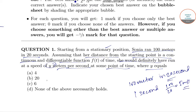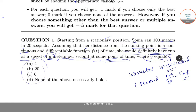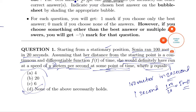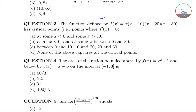At some point in time she would have definitely run at a speed of y meters per second. So y equals 5 meters per second. None of the above is the answer.